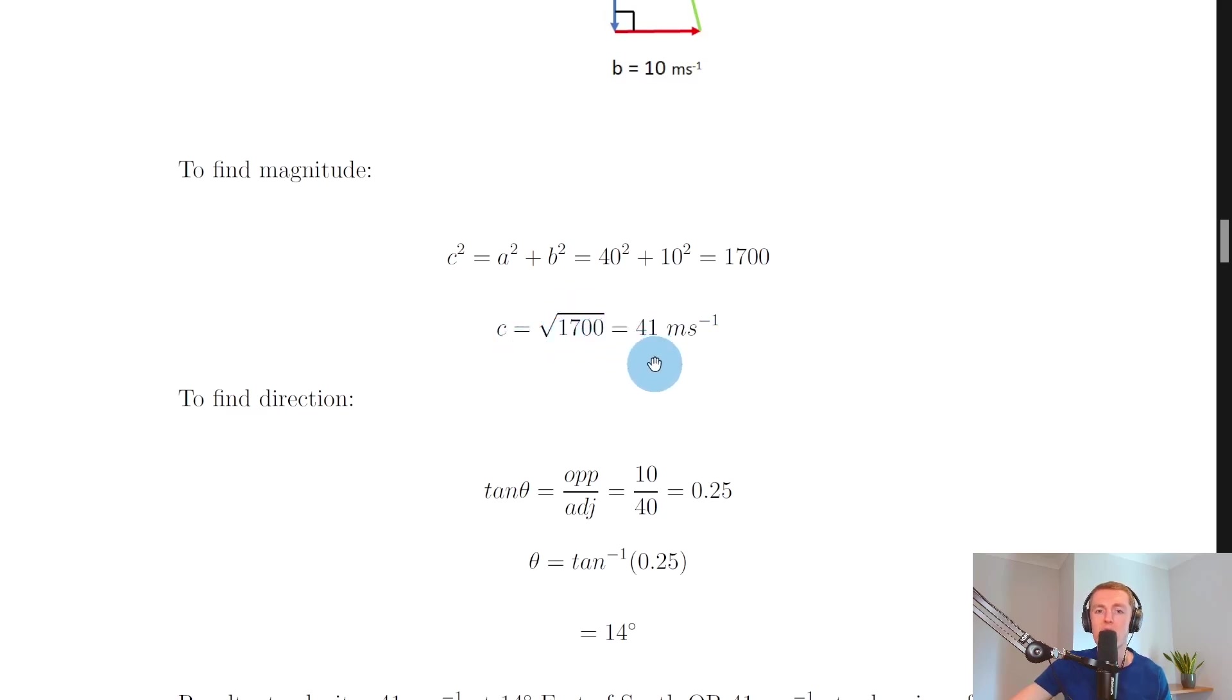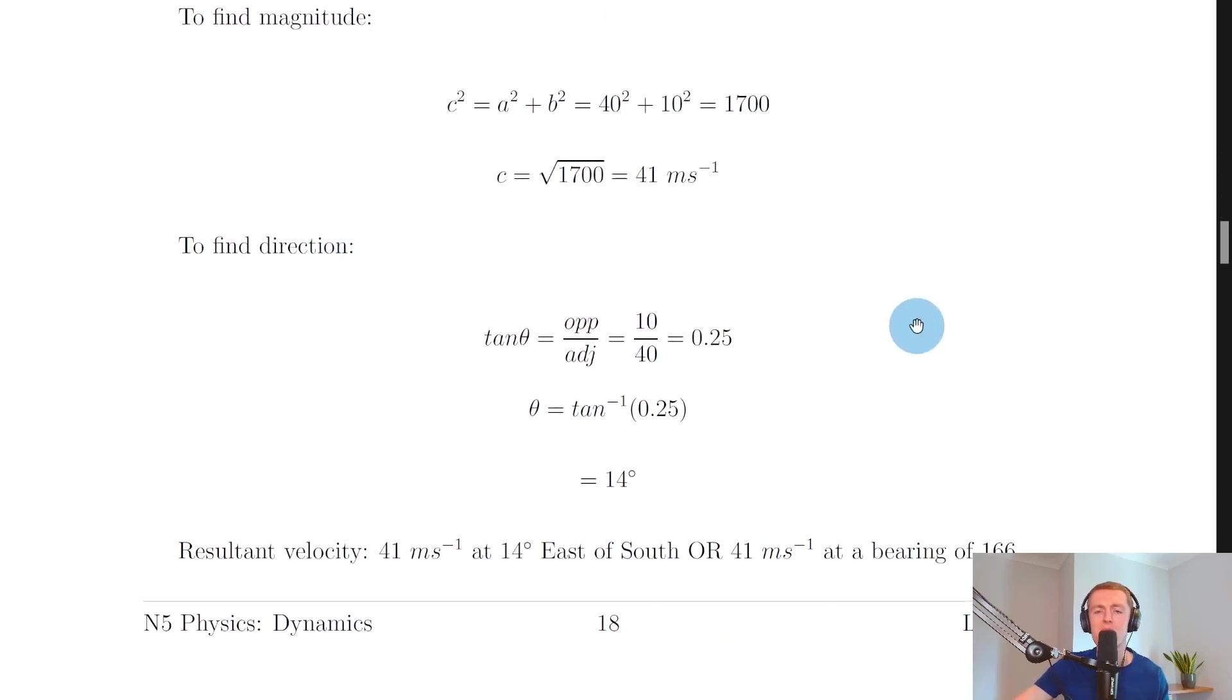So we've got the square root of 1700 which gives us 41 meters per second and then to find the direction we first need to find the angle.